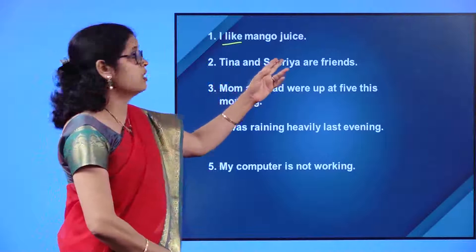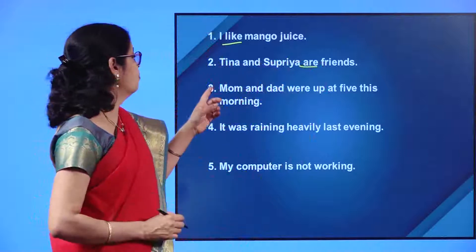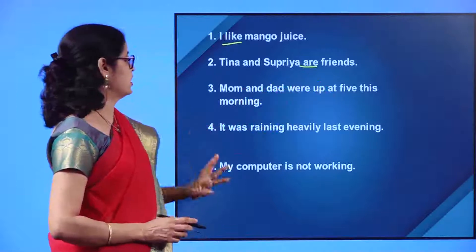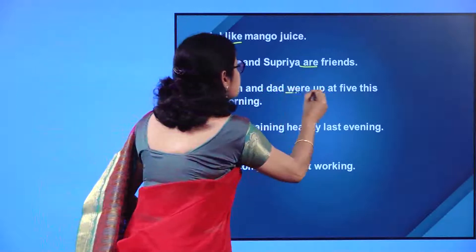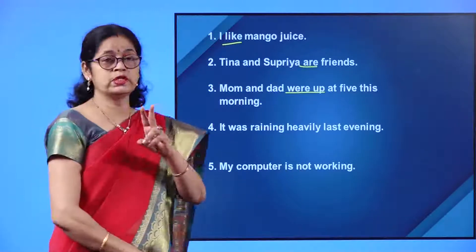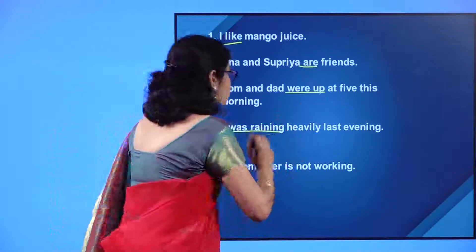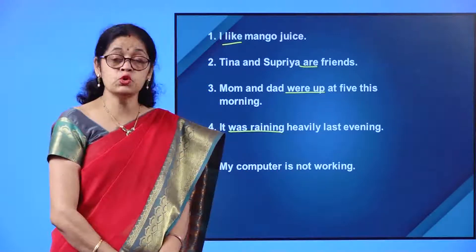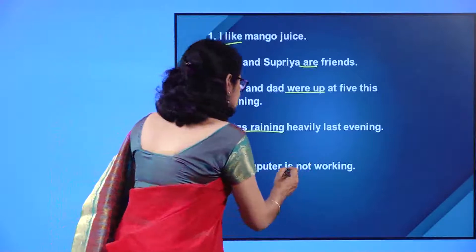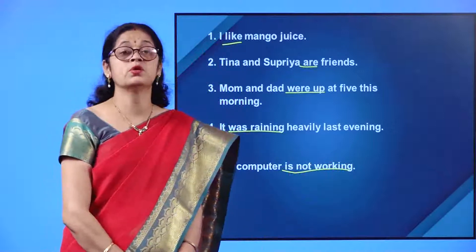'Tina and Supriya are friends' — are is a helping verb. 'Mom and Dad were up at five this morning' — were up is a two-word verb. 'It was raining heavily last evening' — was raining, again two words. 'My computer is not working' — is not working, a three-word verb.